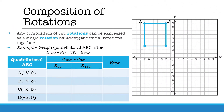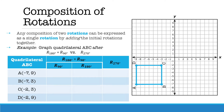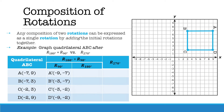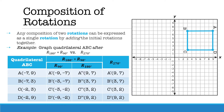Now let's take a look at a composition of rotations. Similar to a composition of translations where you can add the translations together, you can also add the degree measurements for your rotations to get a single rotation. So if we rotate the image 90 degrees counterclockwise and then rotate the image 180 degrees counterclockwise, that is the same thing as rotating our image a single rotation of 270 degrees, because 90 plus 180 gives us 270.